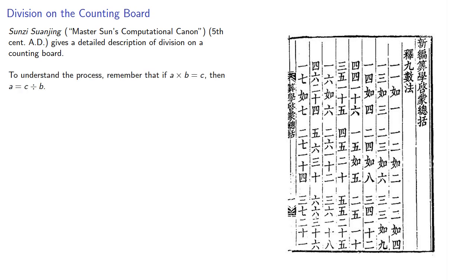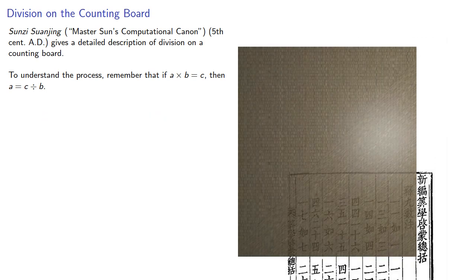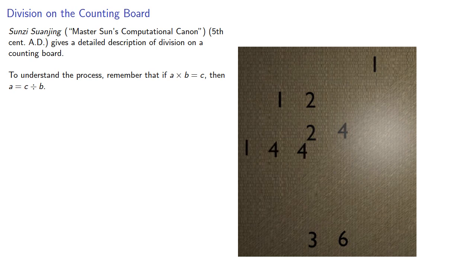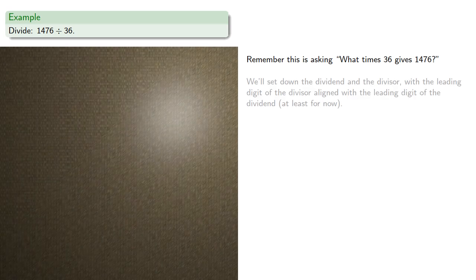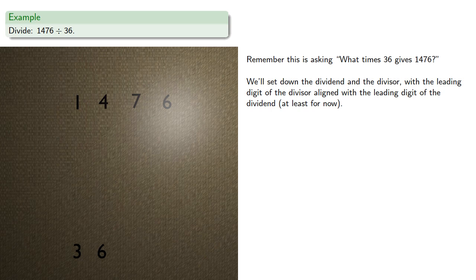To understand the process, remember that if a times b equals c, then a equals c divided by b. So when we multiply 36 by 41 to get 1,476, we could also read this as a division: 1,476 divided by 36. Let's consider that problem — this is actually asking us what times 36 gives 1,476. We'll set down the dividend and the divisor with the leading digit of the divisor aligned with the leading digit of the dividend.